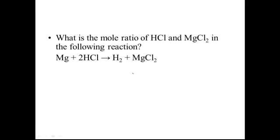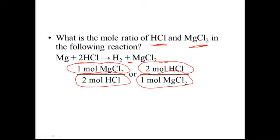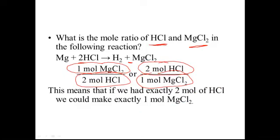Here's another reaction: magnesium reacting with hydrochloric acid to make hydrogen gas and magnesium chloride. The mole ratio of hydrochloric acid to magnesium chloride shows that for every two moles of HCl, we get one mole of magnesium chloride. We could write it either way: one mole of magnesium chloride on top and two moles of HCl on the bottom, or two moles of HCl on top and one mole of magnesium chloride on the bottom. If we had exactly two moles of HCl, it would make exactly one mole of magnesium chloride.